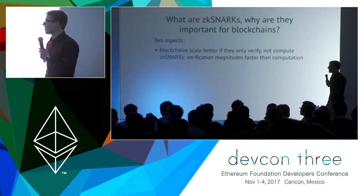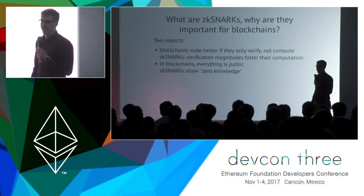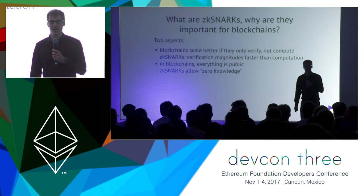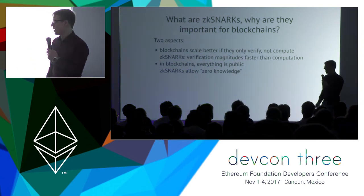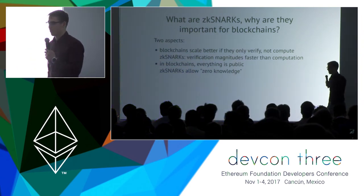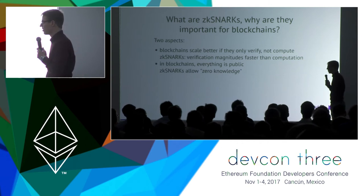The second aspect is that in blockchains, everything is public. All you send to a blockchain is readable by the whole world. And ZK-SNARKs help there because they add a property that is called zero knowledge.